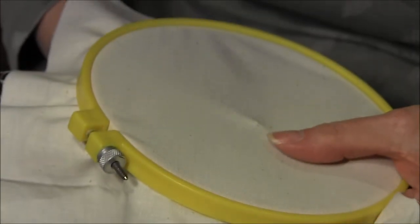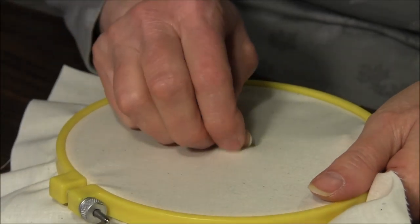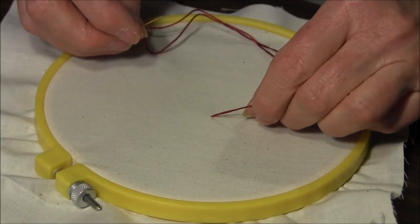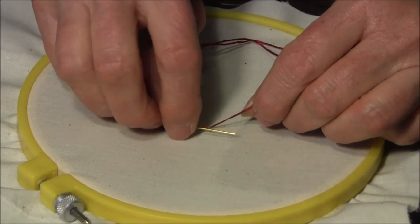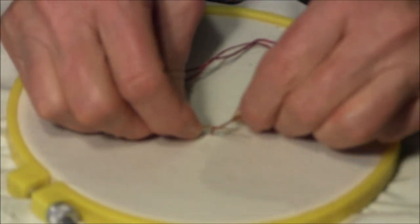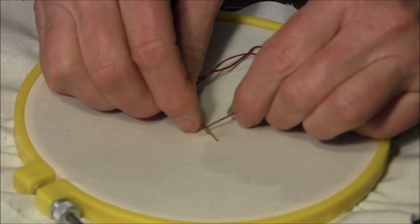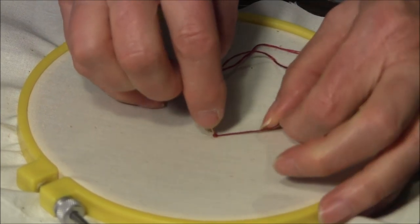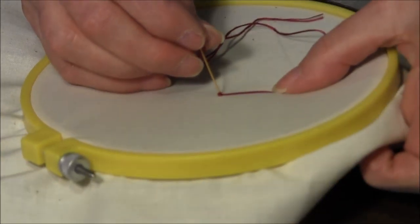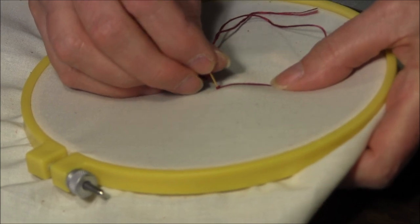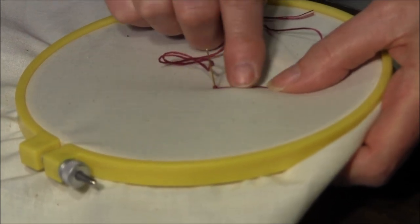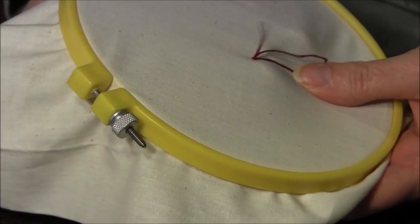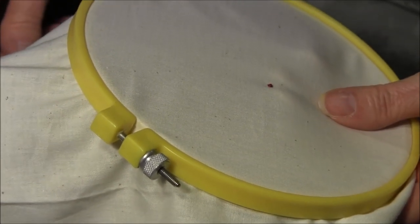Come up through the back of the material. Now you take the needle and you wrap the thread around it two times. You're going to be going back down through the material, but not through the same hole, just right next to it. Hold this with your one finger a little taut.